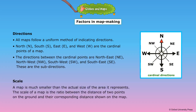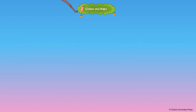A map is much smaller than the actual size of the area it represents. The scale of a map is the ratio between the distance of two points on the ground and the corresponding distance shown on the map.